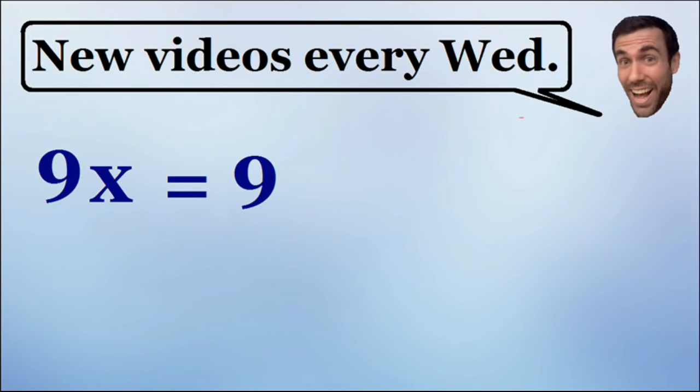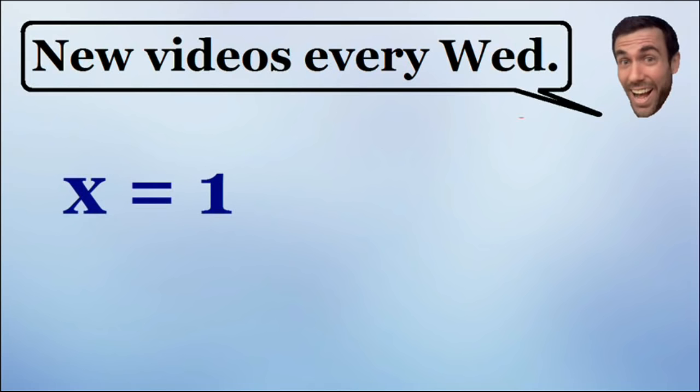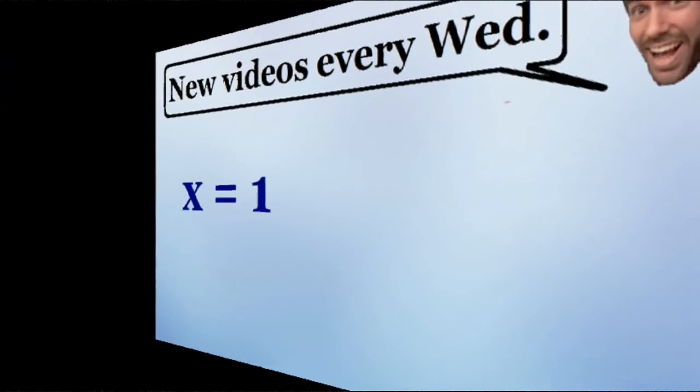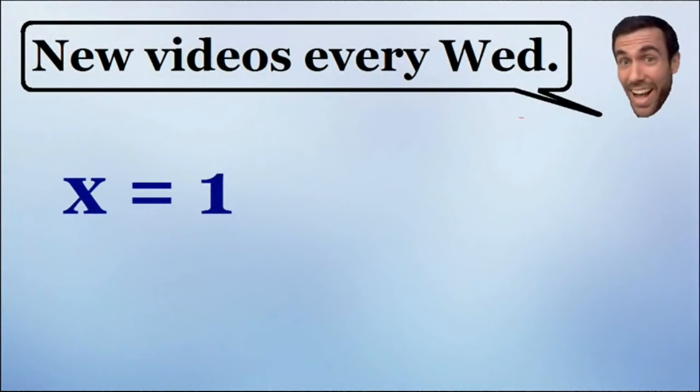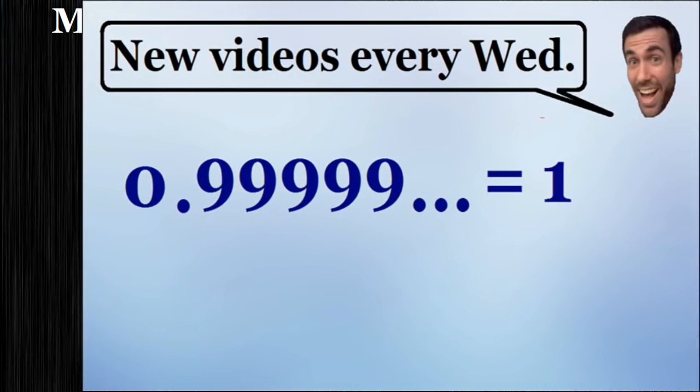So now we have 9x is equal to 9, and if we divide both sides of the equation by 9, we have x is equal to 1. And the value of x has not changed. Remember how we started with a value of x is equal to 0.999... repeating, and we finished with x is equal to 1. So indeed, this demonstrates that the value of 0.999... repeating is indeed equal to 1.